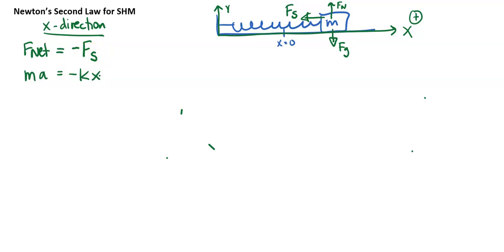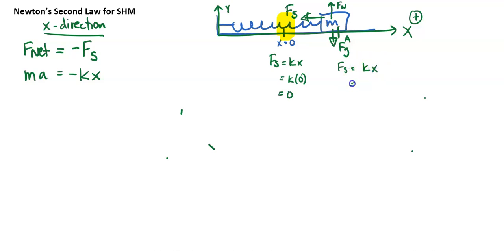Is acceleration constant? Acceleration for simple harmonic motion is not constant. At equilibrium, spring force is k times 0, which is just 0. At the amplitude point, spring force would be kA, and setting that equal to ma, acceleration equals negative kx/m. So acceleration changes with position — it is not constant.